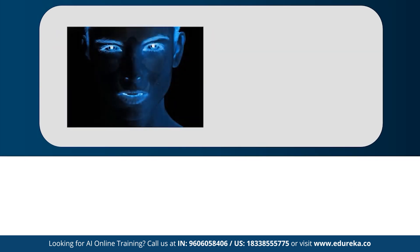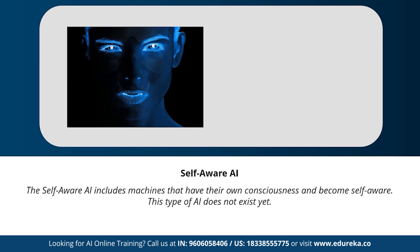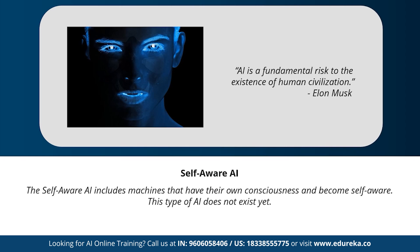Moving on to our last type: self-aware artificial intelligence. Let's just pray that we don't reach the state of AI where machines have their own consciousness and become self-aware. This type of AI is a little far-fetched, but in the future, achieving a stage of super intelligence might be possible. Geniuses like Elon Musk and Stephen Hawking have constantly warned us about the evolution of AI. Do you ever think we'll reach the stage of artificial super intelligence? Let me know in the comments.